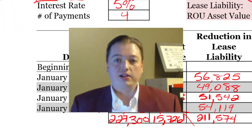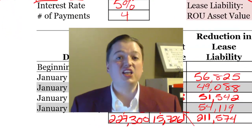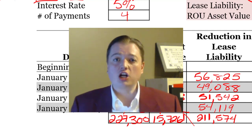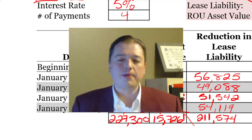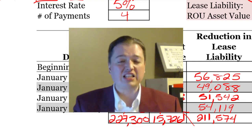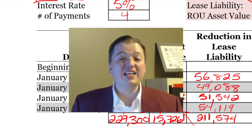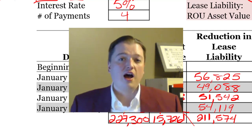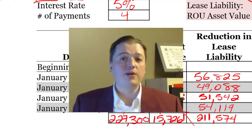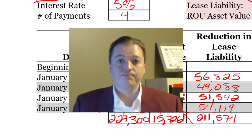Welcome back to our intermediate financial accounting class. In this section we continue our discussion of how a lessee records a lease. We've already talked about why leases are so important, some basic definitions, the rules FASB came up with on how to classify a lease, and we ended last time with a calculation of the amortization table for the lessee, with present value calculations that gave us a zero balance once all payments were made.